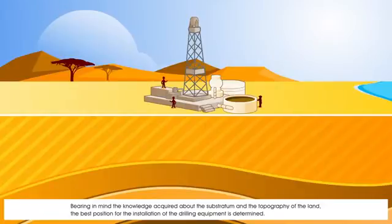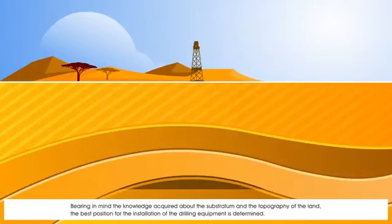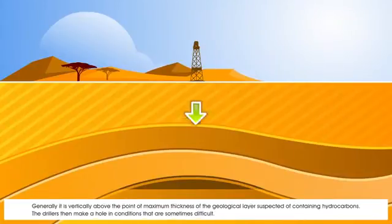Bearing in mind the knowledge acquired about the substratum and the topography of the land, the best position for the installation of the drilling equipment is determined. Generally, it is vertically above the point of maximum thickness of the geological layer suspected of containing hydrocarbons. The drillers then make a hole in conditions that are sometimes difficult.